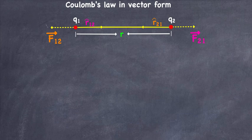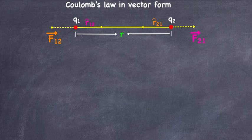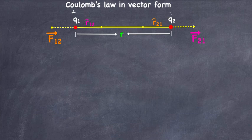In this video I'm going to go over Coulomb's law in vector form, so that means we're going to include the direction of the force as well. Let's say we got two charges, charge q1 and q2, and they are like charges — let's say q1 is a positive charge, then q2 is also a positive charge.